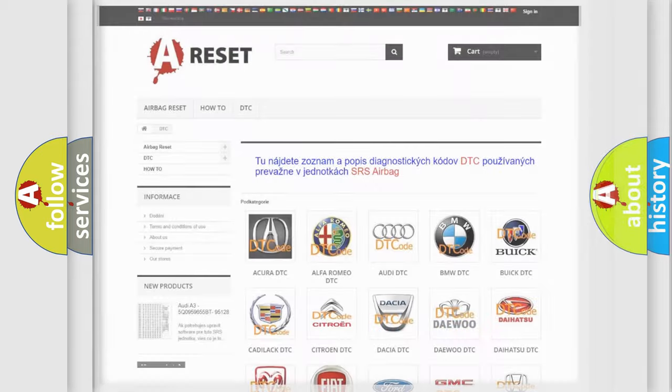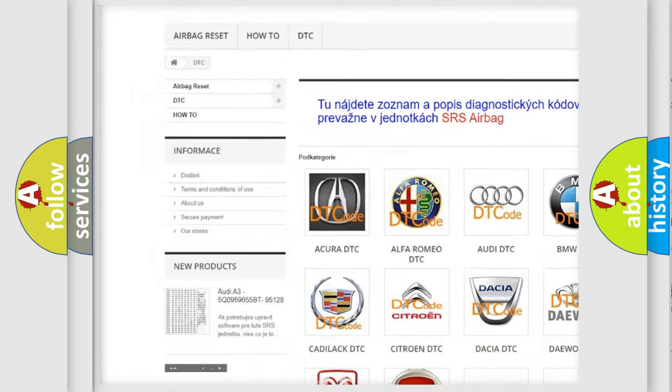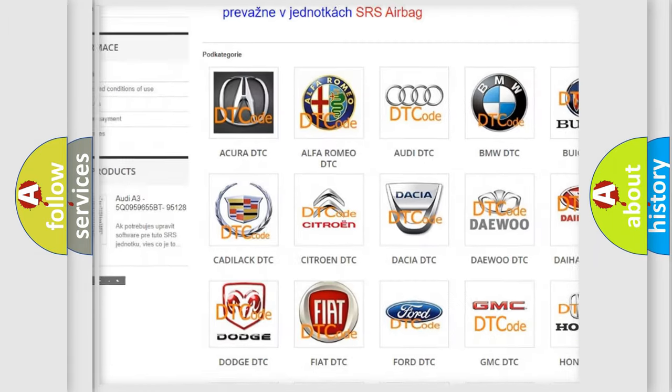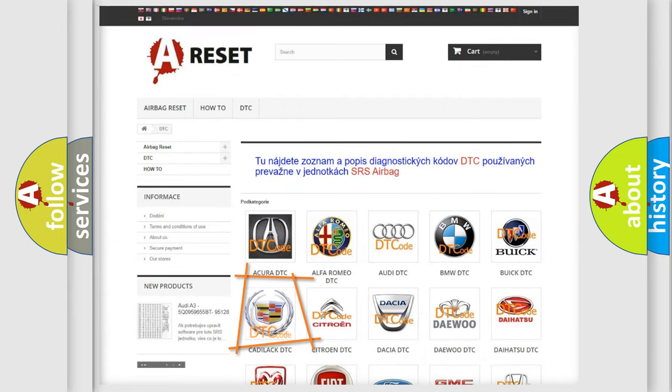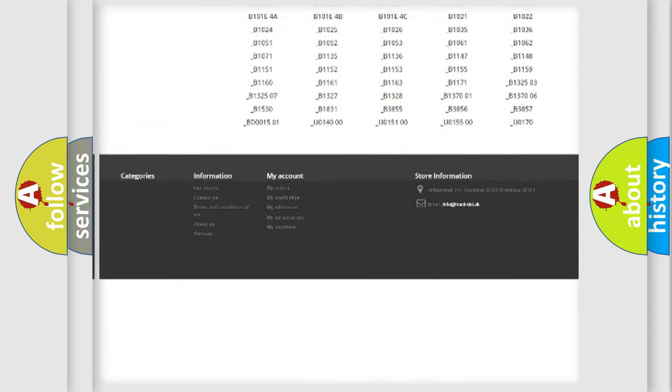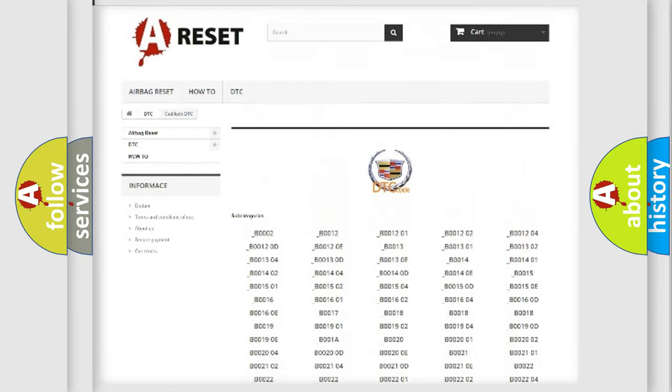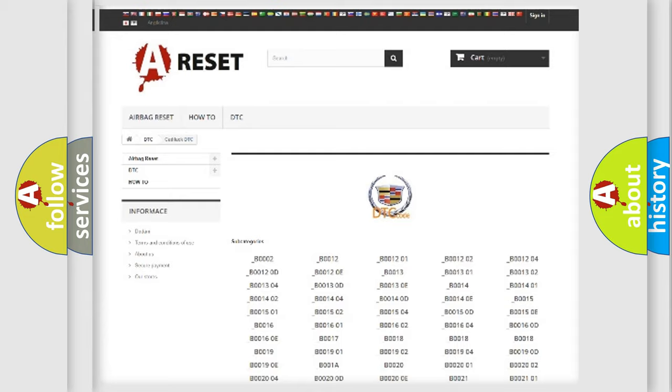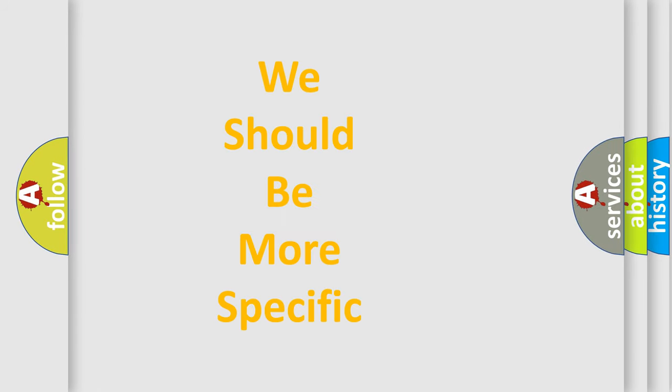Our website airbagreset.sk produces useful videos for you. You do not have to go through the OBD2 protocol anymore to know how to troubleshoot any car breakdown. You will find all the diagnostic codes that can be diagnosed in Cadillac vehicles. Also many other useful things. The following demonstration will help you look into the world of software for car control units.